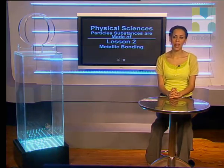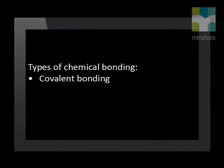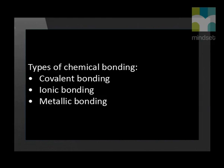Hello Grade Tens and welcome back to this series on particles substances are made of. In the topic chemical bonding we learned that substances can undergo three types of chemical bonding, namely covalent bonding, ionic bonding and metallic bonding.